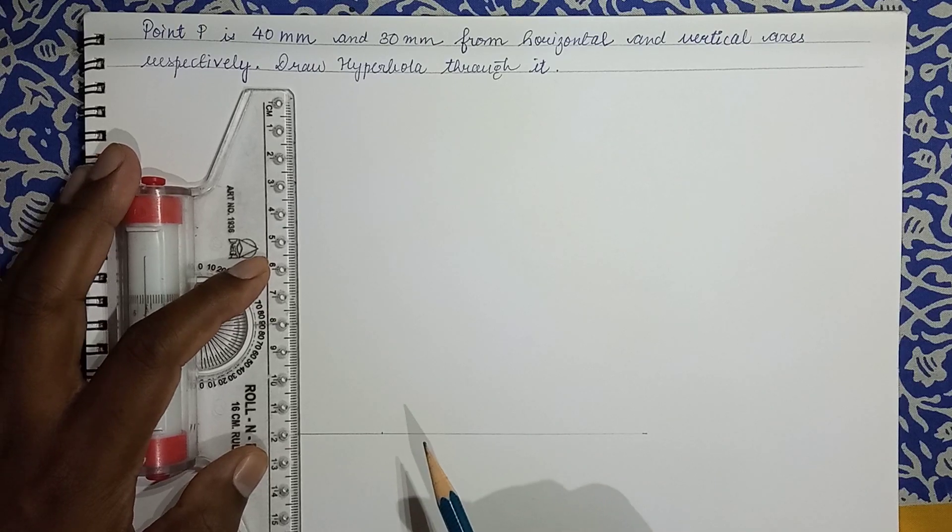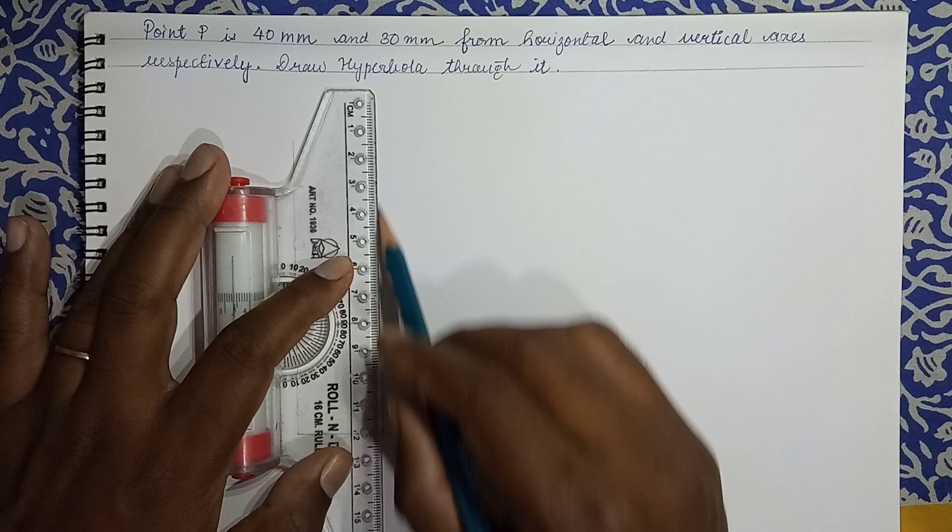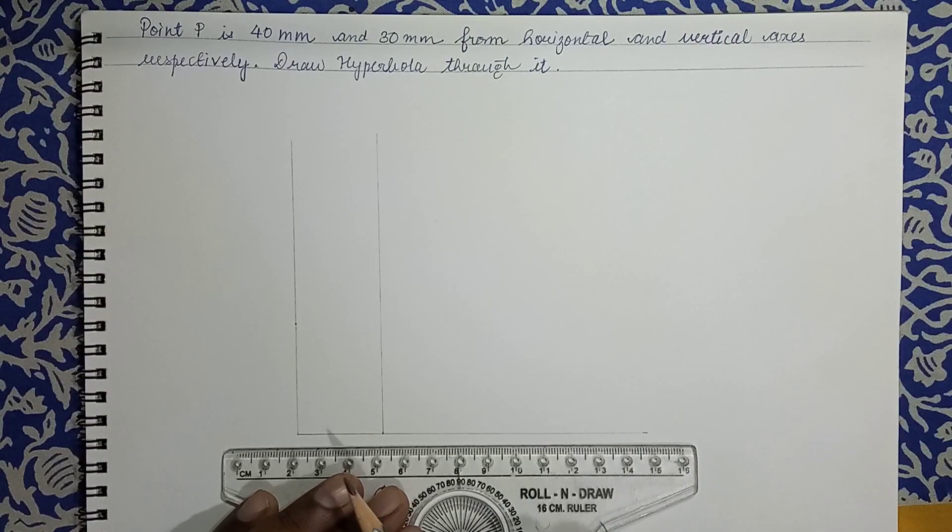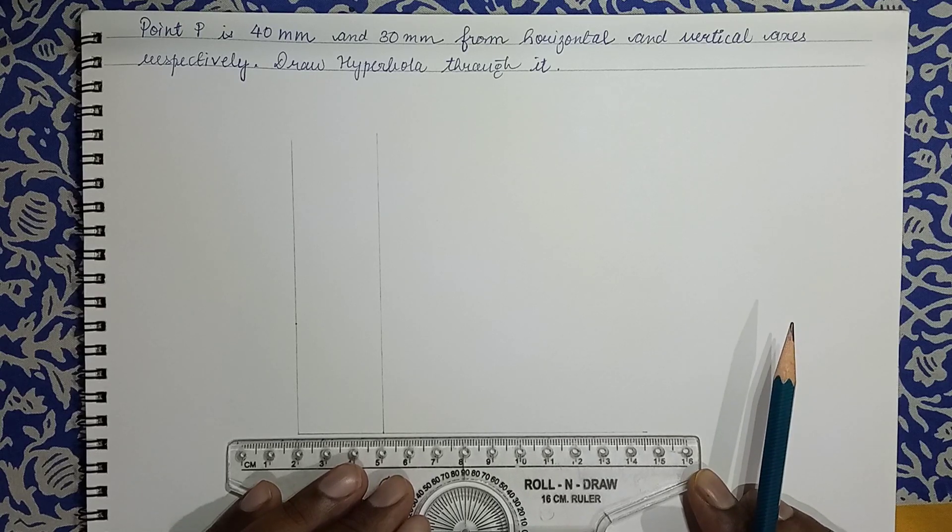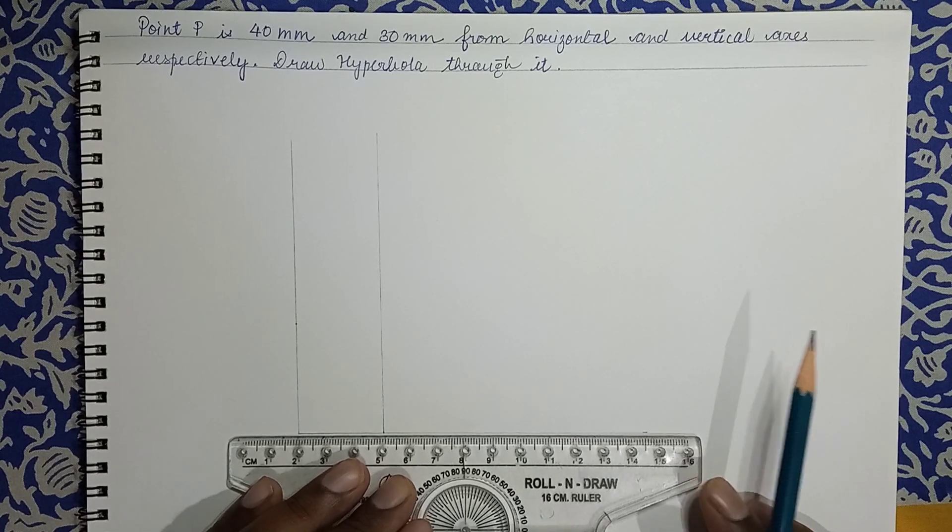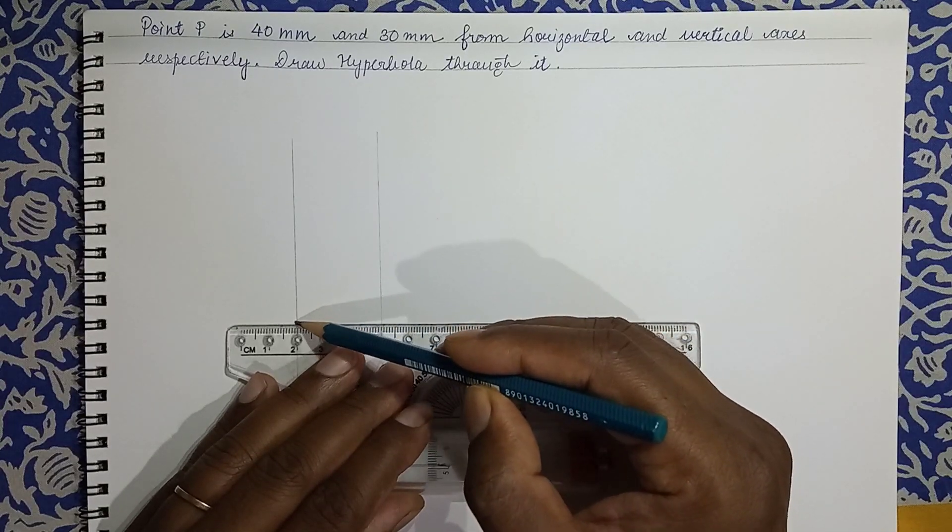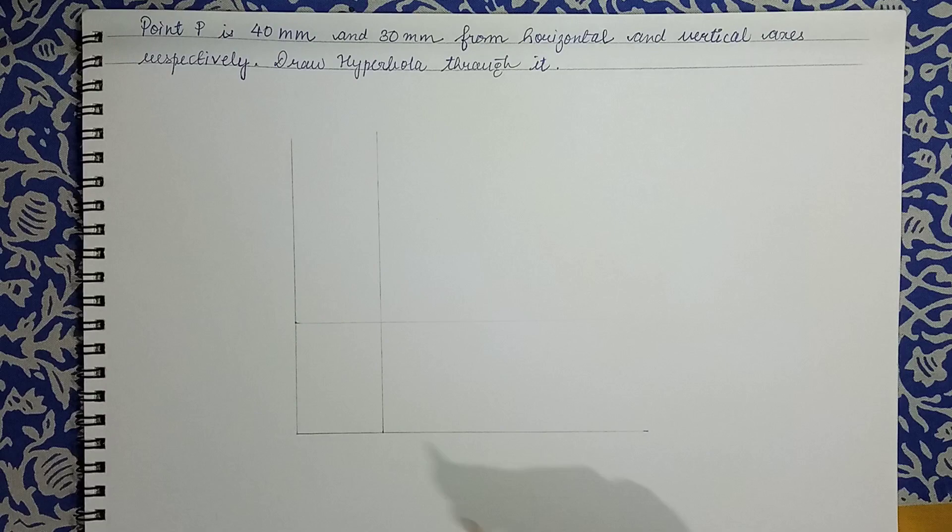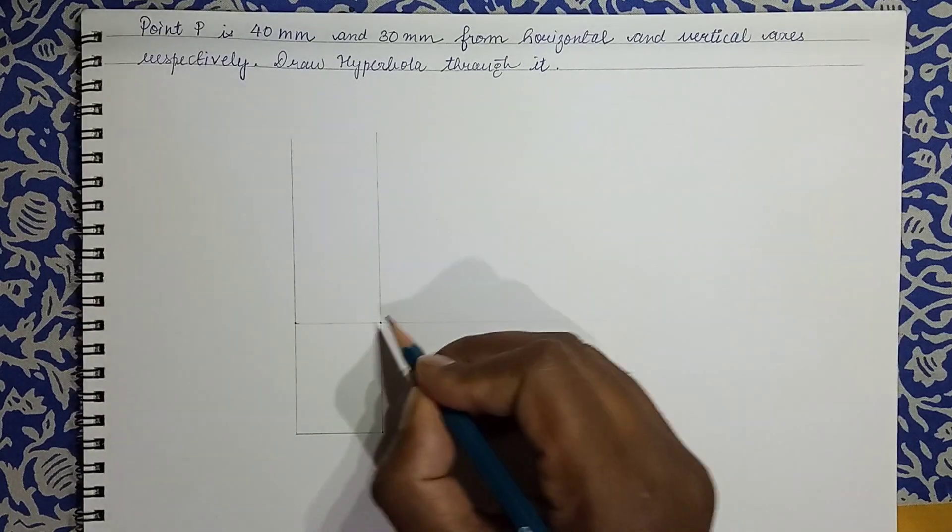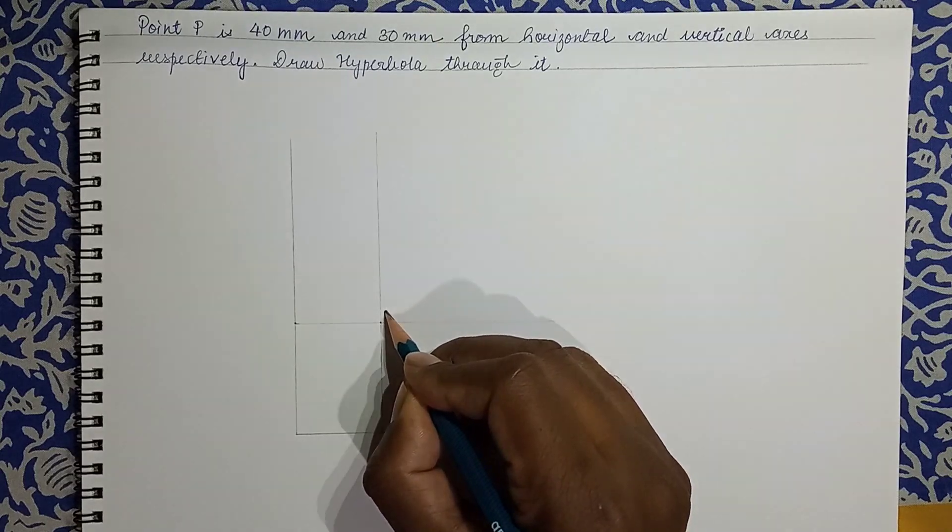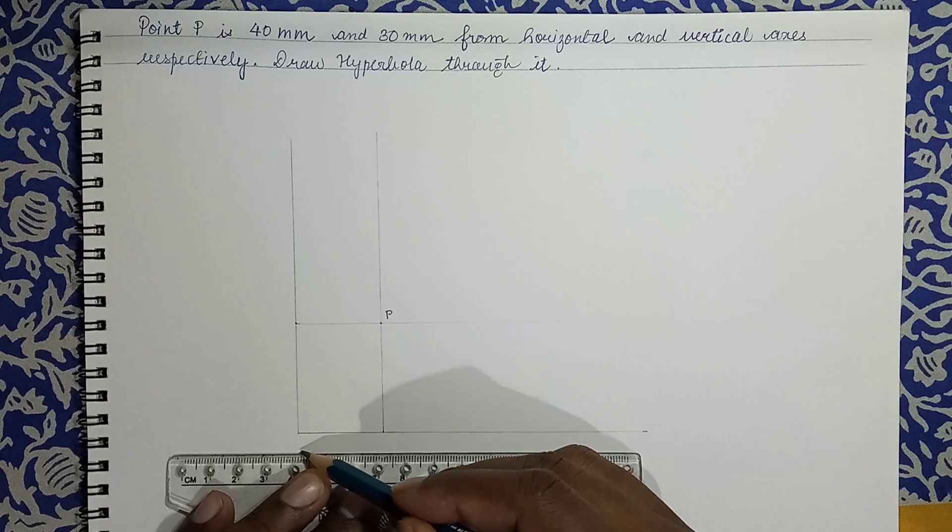We draw a line parallel to vertical axis. Similarly, we have plot a point at a distance of 40mm. So the intersection of this will give me the position of P.